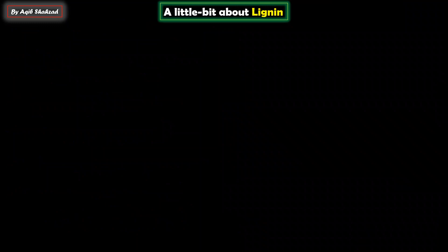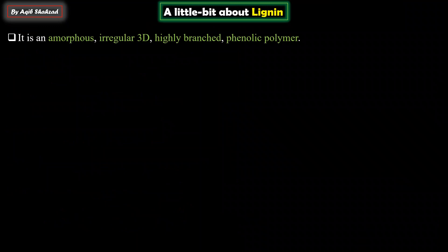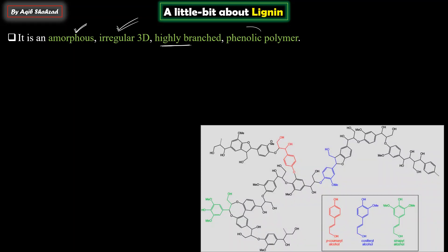Now let's learn a little about lignin. Lignin is amorphous - its structure is not crystalline, not sharp and crisp. It has a regular three-dimensional structure, is highly branched, and it is a phenolic polymer - as you can see, there are many rings in its structure. This is the structure of lignin, with many different types of bonds, linkages, and different types of phenolic units joined together as shown.